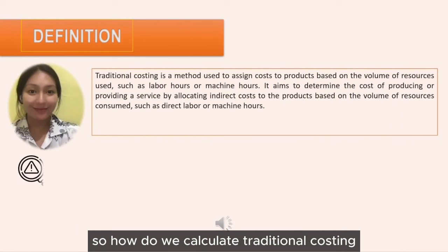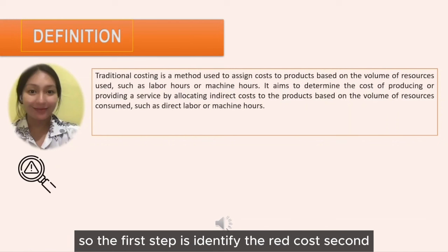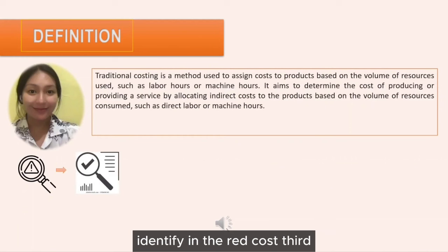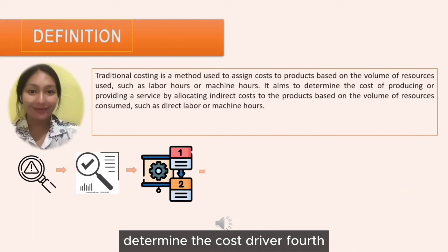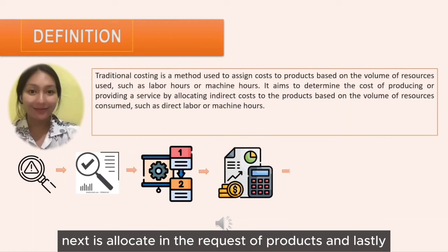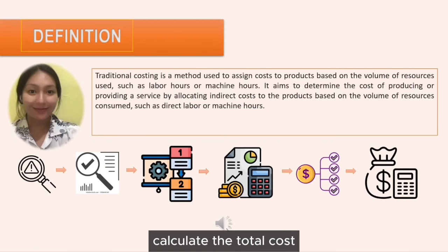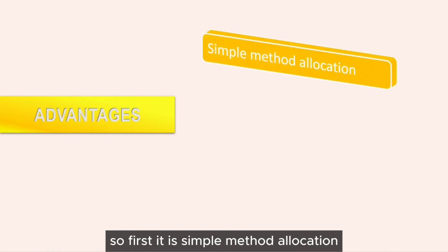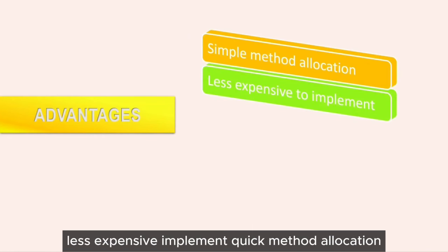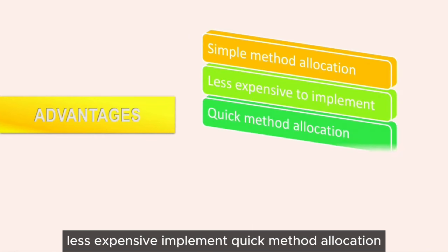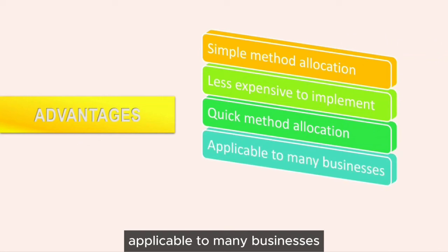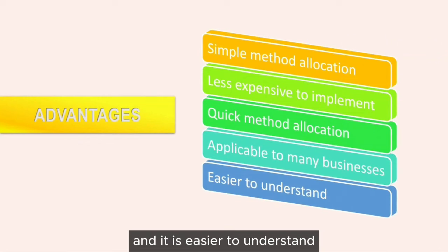To calculate traditional costing: first, identify direct costs; second, identify indirect costs; third, determine the cost driver; fourth, calculate the overhead rate (predetermined); fifth, allocate indirect costs to products; and lastly, calculate the total cost. The advantages of traditional costing are that it is a simple and quick method of allocation, less expensive to implement, applicable to many businesses, and easier to understand.